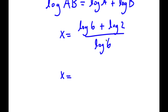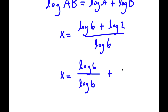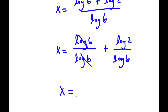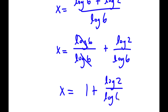Now, log 6 plus log 2 over log 6 is the same thing as log 6 over log 6 plus log 2 over log 6. Log 6 and log 6 cancel out, so now I have x is equal to 1 plus log 2 over log 6.